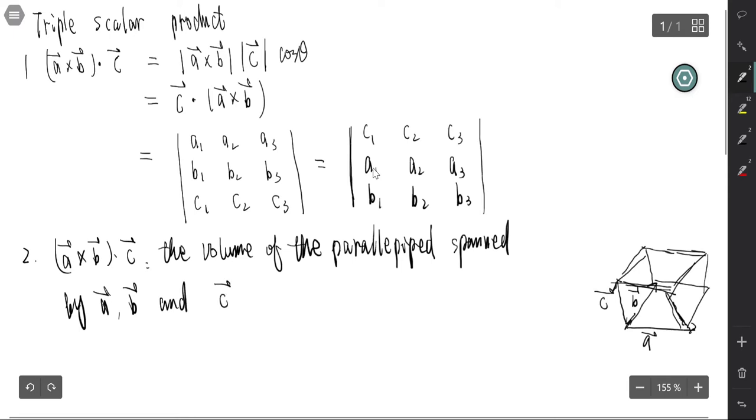Because A cross B dot C, that's the length of A cross B. That is the area of the bottom.